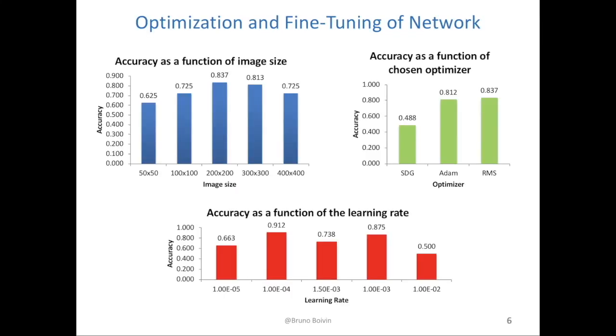First, the optimal input size was determined by training the network on images of different sizes. 200 by 200 gave the best performance and was thus used for this model.